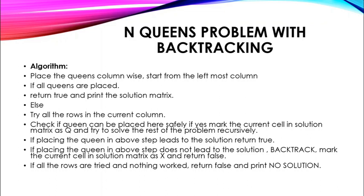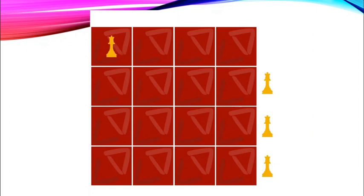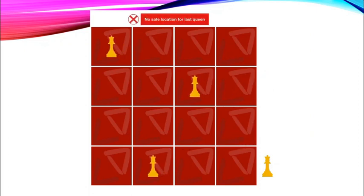If placing the queen leads to a solution, return true. If it does not lead to a solution, backtrack: mark the current cell as X (empty cell) and return false. If all rows are tried and nothing worked, return false and print no solution. You can see a demonstration of the N-queens problem with backtracking where N equals 4.